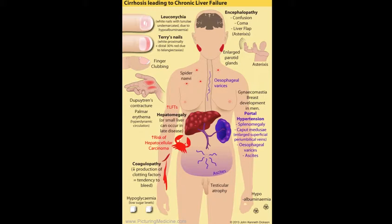This diagram summarizes the pattern of disease that we observe in patients who have cirrhosis, which can in turn lead to chronic liver failure. Cirrhosis and chronic liver failure are conditions which are especially important for those studying medicine. Hospitals usually have a great number of patients with chronic liver disease, and it's a common challenge for medical students to examine patients and identify all of these different features of chronic liver failure.